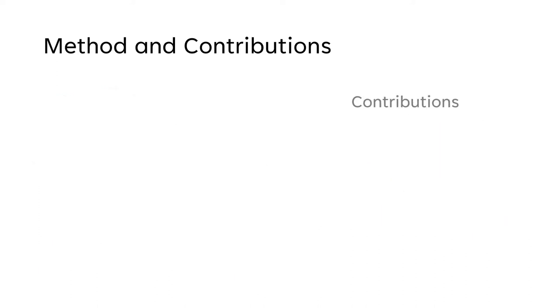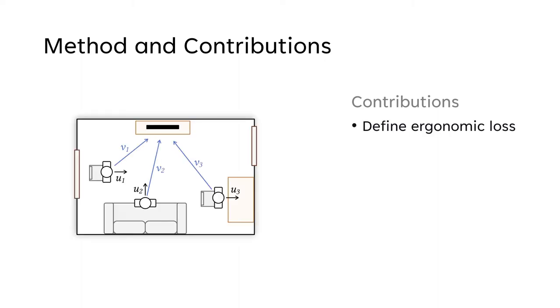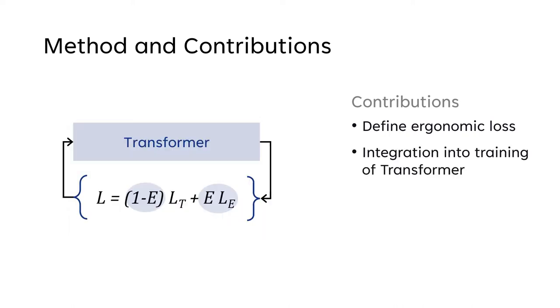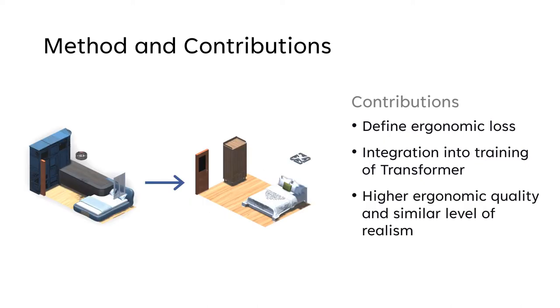The paper features the following contributions. It introduces an ergonomic loss for indoor layout design derived using expert knowledge. It integrates this loss into the training of a transformer network to control the learned probability distribution. And it empirically demonstrates that a generative model can create samples with higher ergonomic quality than the ground truth while maintaining a similar level of realism.